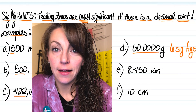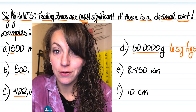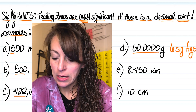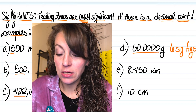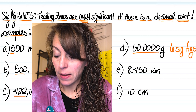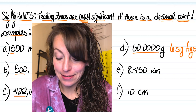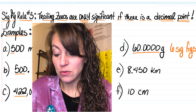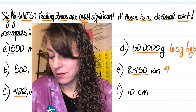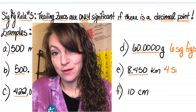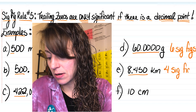In letter E, we have 8.450 kilometers. We have three nonzero digits followed by a zero, making that a trailing zero. There's a decimal point, so they all count, and we're looking at four sig figs for this particular measurement.